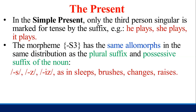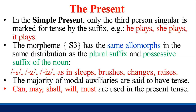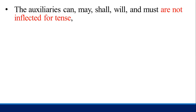The morpheme S takes the forms: S as in 'sleeps,' Z as in 'brushes,' 'changes,' 'raises.' The majority of modal auxiliaries are said to have tense — can, may, shall, will, must are used in the present tense. However, can, may, shall, will, and must are not inflected for tense: I can, we can, you can, they can, he can, she can, it can.